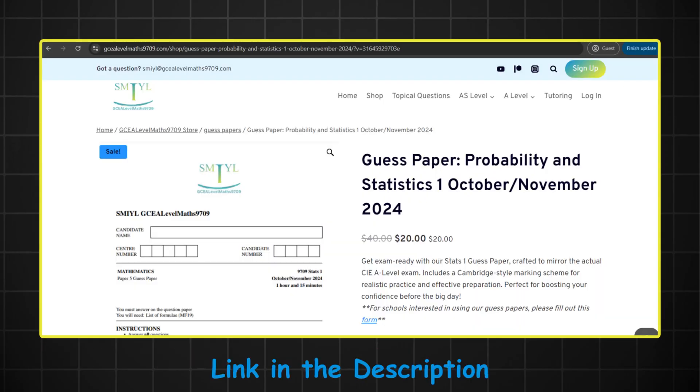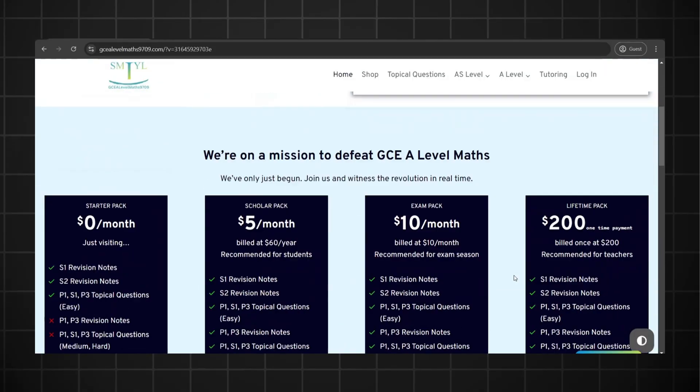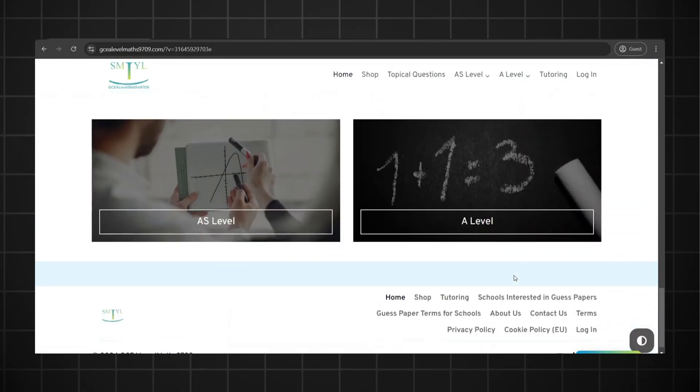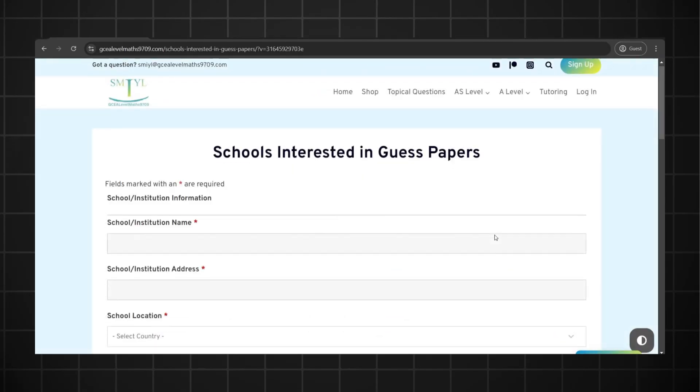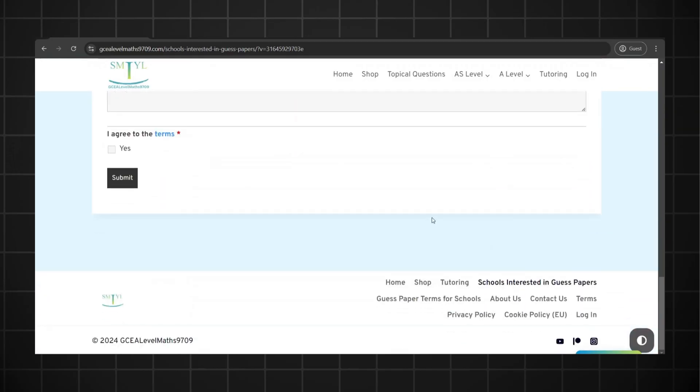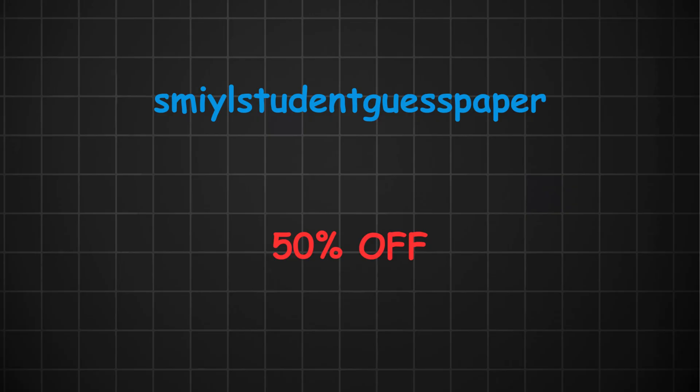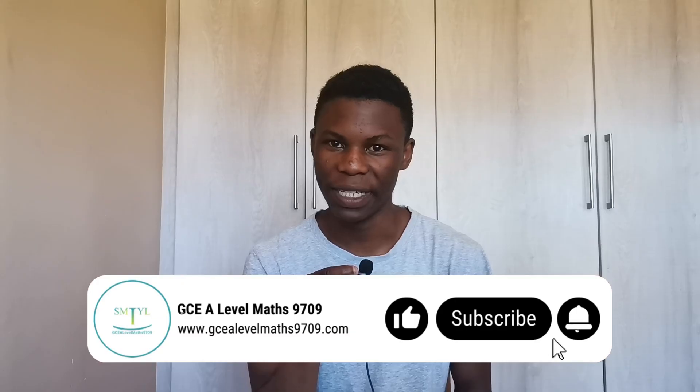If you want the guest paper, it's available on my website and it comes with a Cambridge style marking scheme. It's pretty much the exam before the exam. So make sure to check that out if you want an unfair advantage going into the October-November exams. For schools who are interested in using our guest papers or would like us to create their mock papers, feel free to fill in the form on our website and we will assist you. Oh, and I forgot to mention, you can use the discount code SMILESTUDENTGUESTPAPER to get 50% off on the guest paper. Link is in the description. The Pure 3 guest paper is coming next week, so make sure to subscribe so you don't miss it.